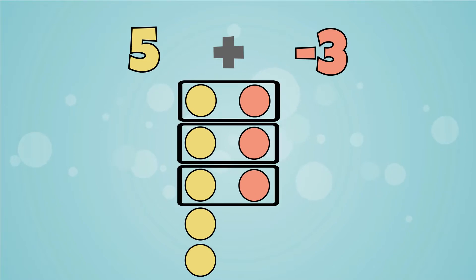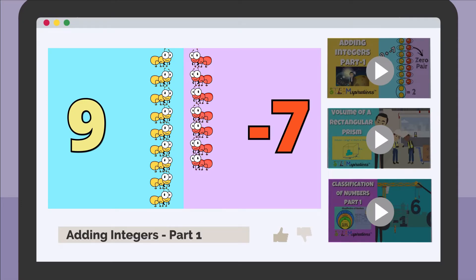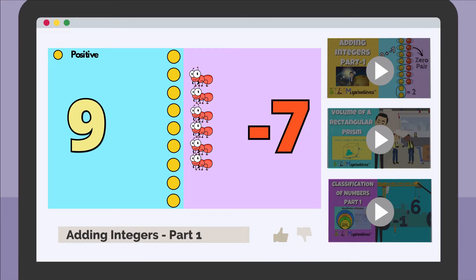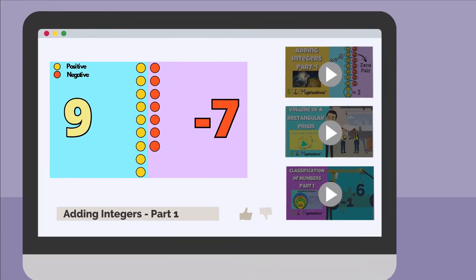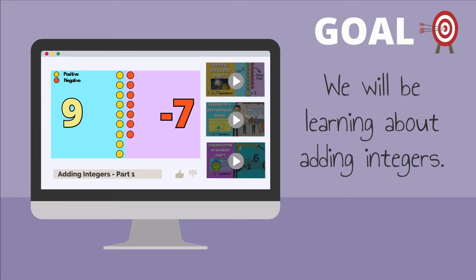Did you know that we can find the sum of any negative and positive number by forming zero pairs? Last lesson, we learned that we can add integers by using counters and forming zero pairs. In this video, we will continue to learn more about this concept.